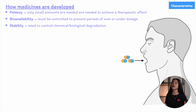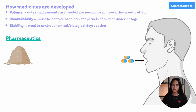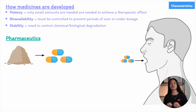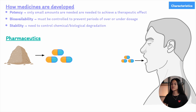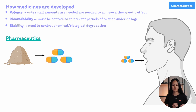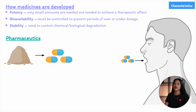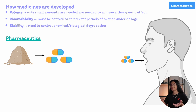Instead, drugs are formulated and administered as medicines — this is where pharmaceutics comes in. Pharmaceutics is the science of converting a drug into a usable medicine, transforming a pure chemical known for its potency and specificity into a formulation that patients can safely take, ensuring reliable and controlled effects with minimal side effects. This requires the expertise of pharmaceutical scientists who focus on creating stable medications that maintain their effectiveness.